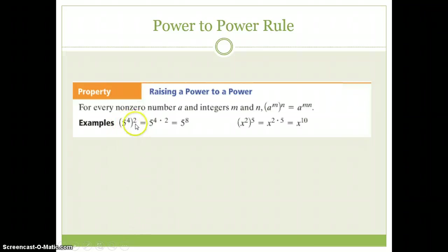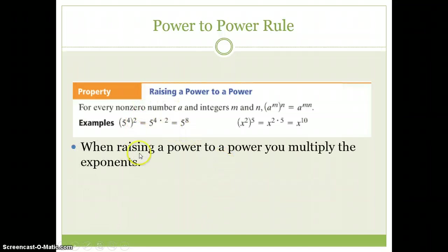This is 5 to the fourth squared, and how do we solve that? The key here is when raising a power to a power you multiply the exponents. I'm going to do what they do right here, 4 times 2 is 5 to the eighth, and we're good with that answer.